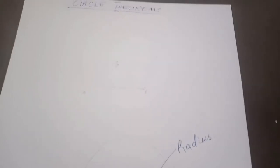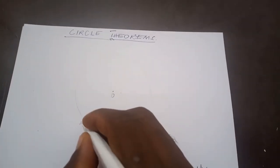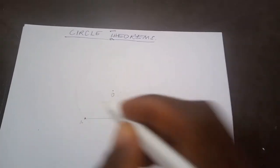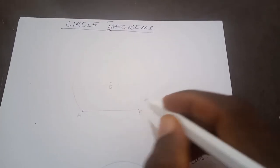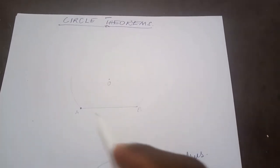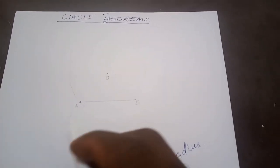We can also talk about an arc. We have point A here and point B here. So when you move along the circumference from A to B along the circumference — not along the line but along the circumference — that path qualifies to be called an arc. So an arc is any part of the circumference of a circle.